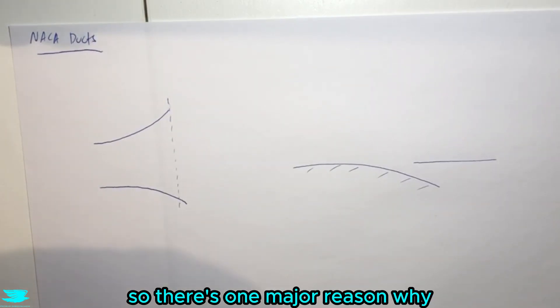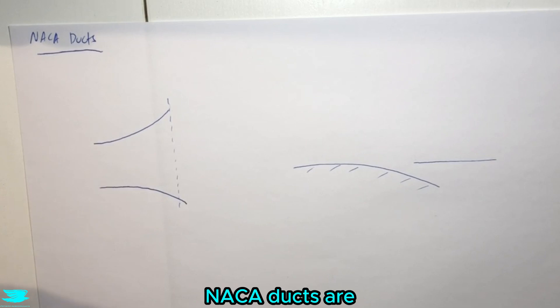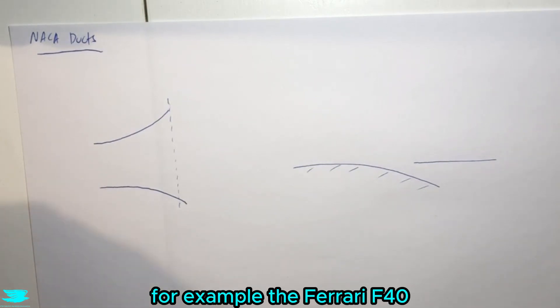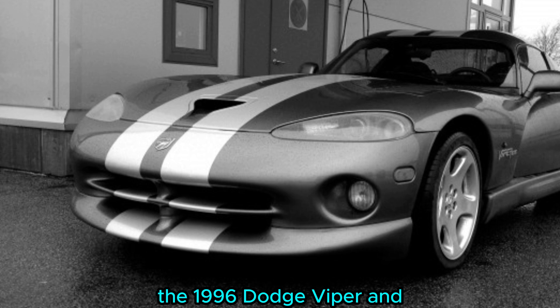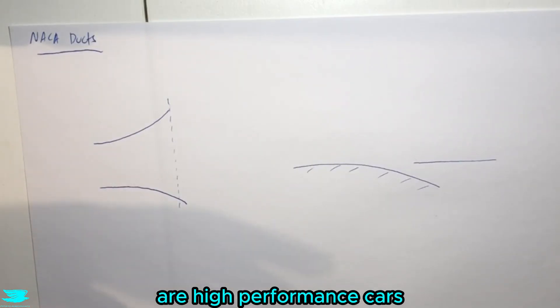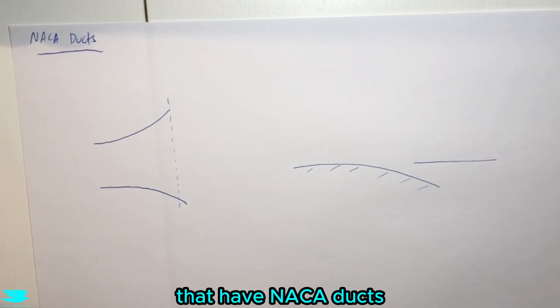So there's one major reason why NACA ducts are featured on a lot of cars. For example, the Ferrari F40, the Lamborghini Countach, the 1996 Dodge Viper, and the 1971 Mustang are high-performance cars that have NACA ducts.